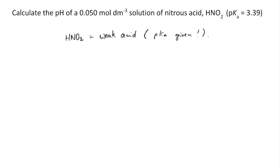So the fact that they've given us a pKa value is a clue that this is a weak acid. And the pH or the H plus concentration of a weak acid is found by square rooting the Ka multiplied by the HA concentration. And then obviously we're going to minus log that.